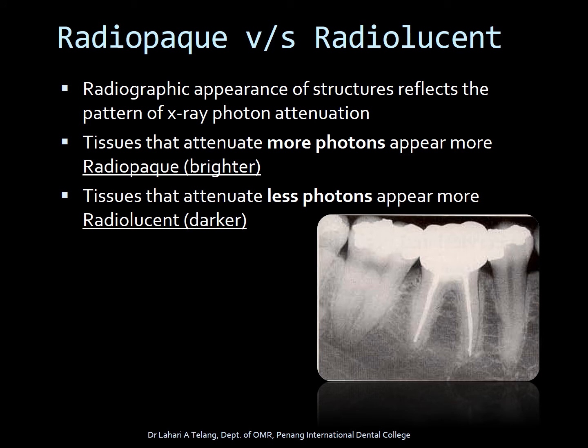First of all, it is important to understand the difference between what is radiopaque and what is radiolucent. The radiographic appearances of structures reflect the pattern of X-ray photon attenuation. Tissues that attenuate more photons appear more radiopaque or brighter, and tissues that attenuate less photons appear more radiolucent or darker. Based on the radiograph here, the radiolucent aspect is the pulp, and the radiopaque ones are enamel, dentine, or restorations.